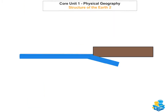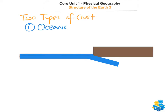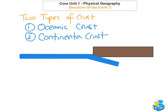The first thing we're going to look at is the different types of crust that you can have, and there are two types of crust. The first is oceanic crust and the second is continental crust. As you can see, the oceanic crust is this one here and the continental crust is the brown one here.